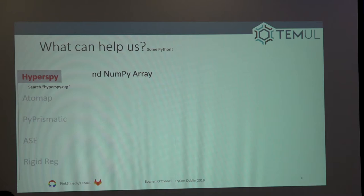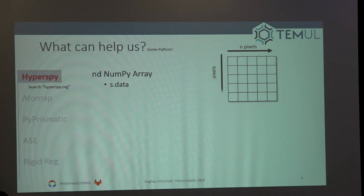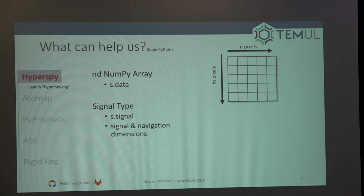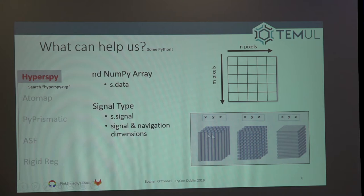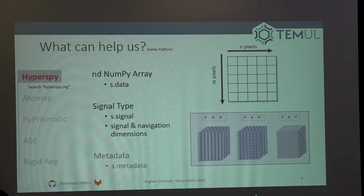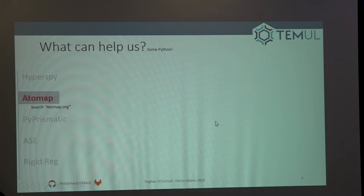HyperSpy is basically built on a NumPy array — it's simply an N-dimensional NumPy array. If the object is 's', you call s.data. We're mainly talking about two-dimensional NumPy arrays here, basically an image with pixels. The signal type is the power of HyperSpy: you can call it with s.signal. HyperSpy is designed to manipulate multi-dimensional data. You can imagine three-dimensional data viewed in different ways — as a movie frame by frame, or with navigation dimensions in X and Y and signal integrated over the Z column. Metadata handling is always important and always a challenge.